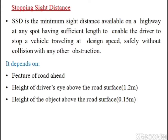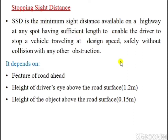Stopping sight distance (SSD) is the minimum sight distance available on a highway at any spot, having sufficient length to enable the driver to stop a vehicle travelling at design speed safely without collision with any obstruction. It is the distance required for a driver to stop his vehicle at any instant without any collision or accident.